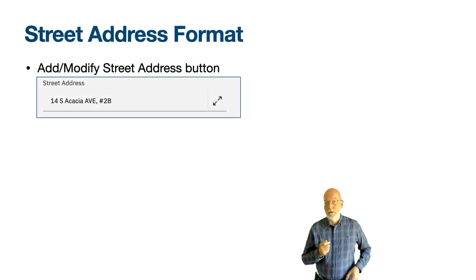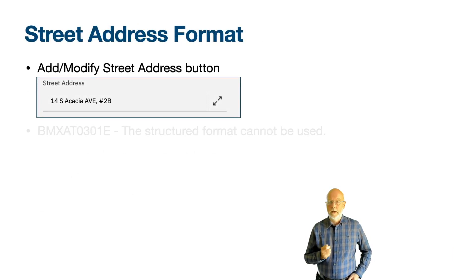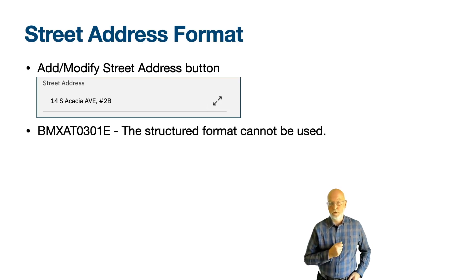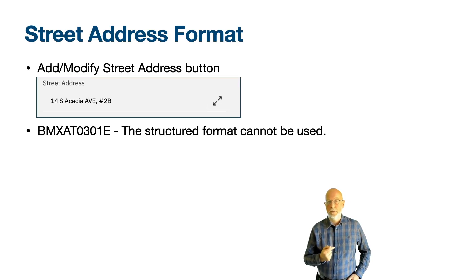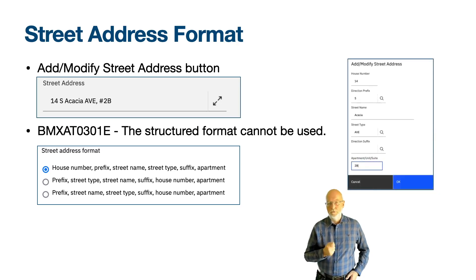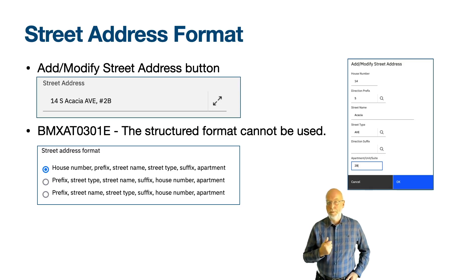The Add Modify Street Address button on the Street Address field will normally produce the error BMX80-0301e: the structured format cannot be used. To enable the use of this button, in the Service Address Options dialog in the Organizations application you need to set 'Use the format that is defined in the service address application.' The Service Address Format option is a radio button with three options, where house number, prefix, street name, street type, suffix, and apartment is the default. When the Add Modify Street Address dialog opens, you are presented with six fields to build a structure for the street address — when populated, the street address will be read-only.